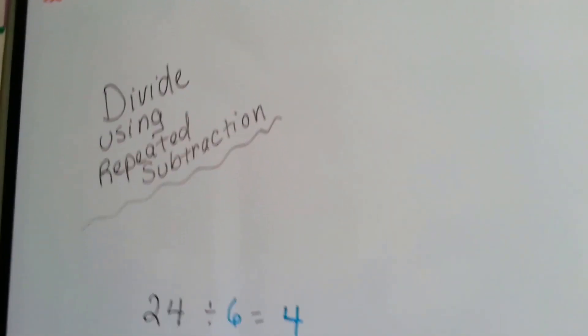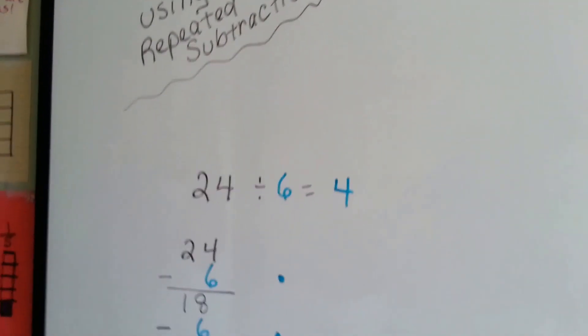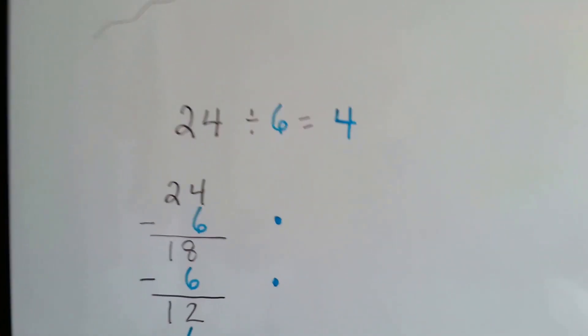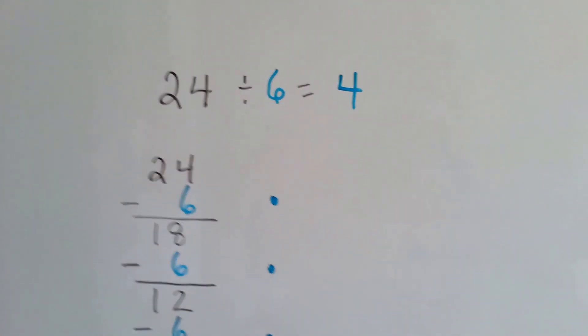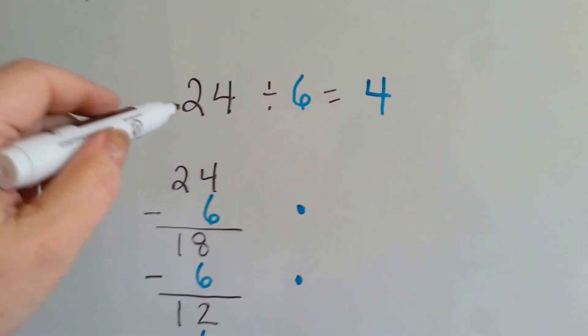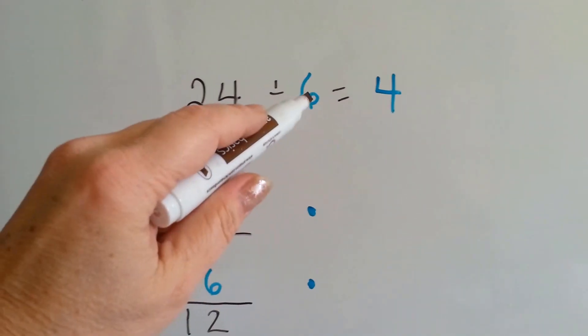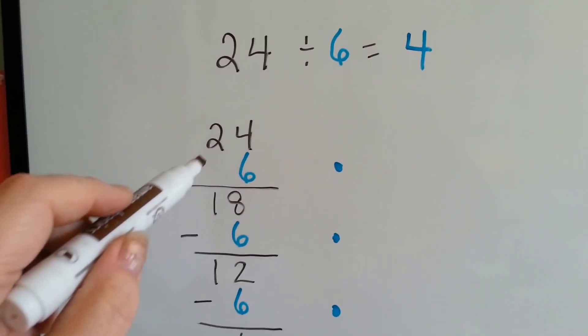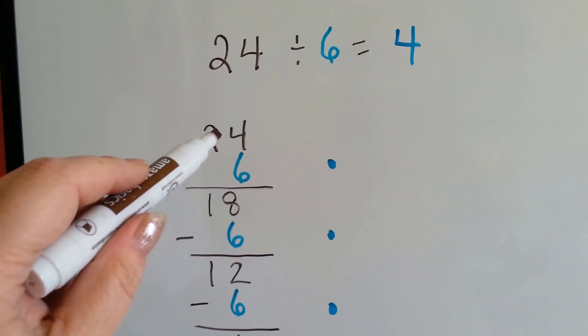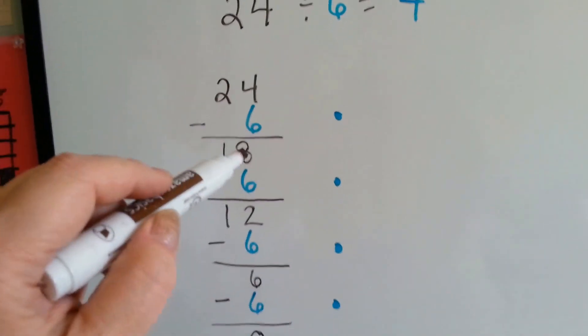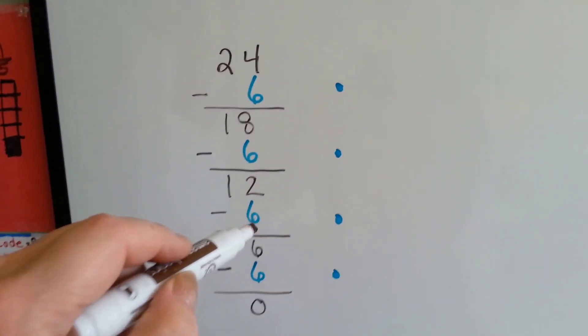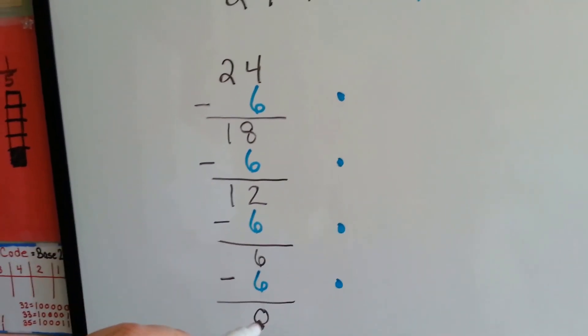You can repeatedly subtract to divide. If we have 24 divided by 6, we start with the 24 and we keep taking 6's away until we get to 0.